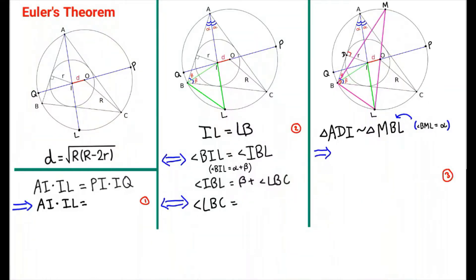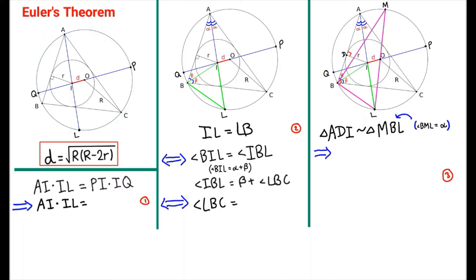This is Euler's Theorem in Geometry, where d is the distance between the incenter and circumcenter of triangle ABC. The incenter is the center of the inscribed circle, and the circumcenter is the center of the circumscribed circle. Capital R is the radius of the circumcircle, and lowercase r is the radius of the inscribed circle.